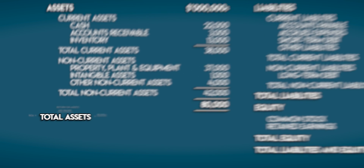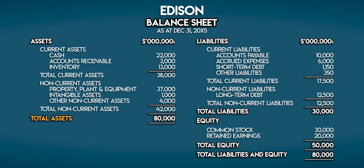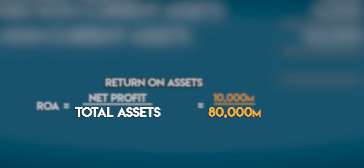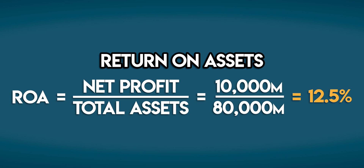Total assets live in the balance sheet. The balance sheet gives us a snapshot of a business's assets, liabilities, and equity at a point in time. Edison's assets are on the left side of the balance sheet — this is a breakdown of the stuff they own on December 31st. Total assets come to 80 billion dollars. So we can work out Edison's return on assets by dividing net profit of 10 billion by total assets of 80 billion, which comes to 12.5 percent.